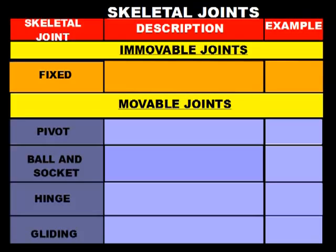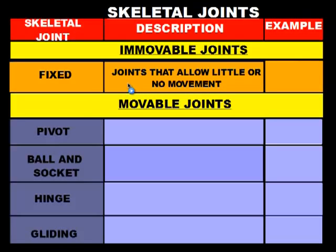The first joints we're going to talk about are the immovable joints. There is only one type of immovable joint inside of the body, and that's called a fixed joint. A fixed joint means these are joints that have little or no movement. Two examples where you would find fixed joints in your body include the skull and the pelvis.